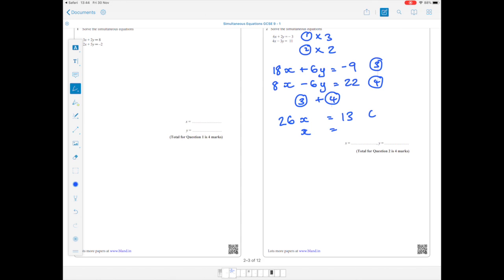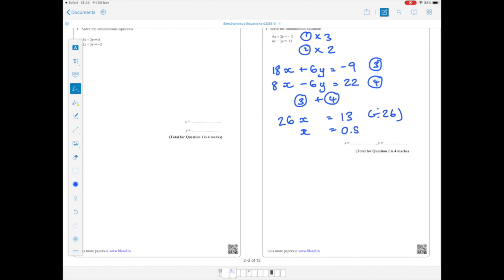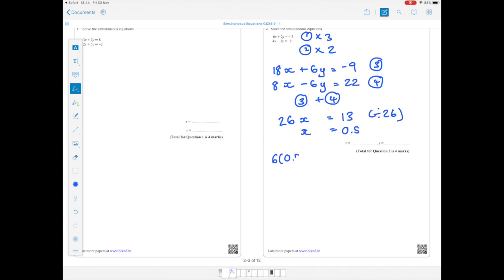To get X by itself, you need to divide both sides by 26, so X equals 0.5. I'm now going to substitute in X equals 0.5 into equation 1. So that's therefore 6 times 0.5 plus 2Y equals minus 3. 6 times 0.5 is 3.